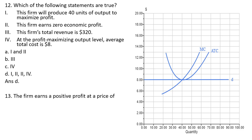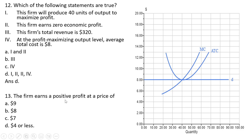Question 13: this firm earns positive profit at a price of $9. Any price above $8—above the minimum point on the average total cost curve—this firm would earn positive economic profit. Answer choice A for question 13 is correct.